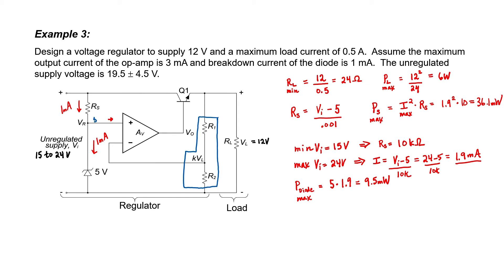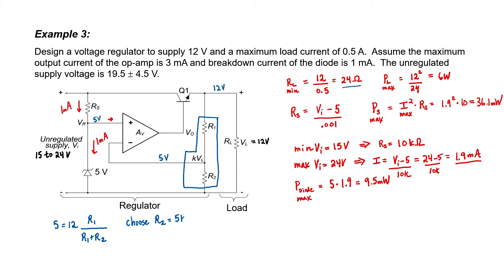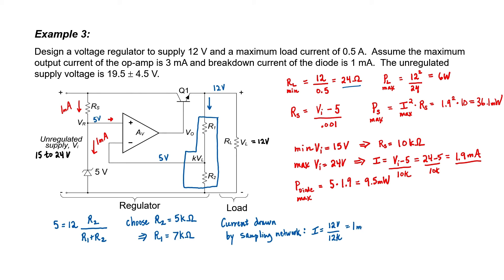We now need to design our feedback network. Since the Zener diode has a breakdown voltage of 5 volts, we need to ensure that the other signal going into the op amp is also 5 volts. Our voltage regulator is supposed to give us 12 volts at the output, so I need to design the voltage divider to give us 5 volts starting from 12. Our load resistor is a pretty small resistor at 24 ohms, so the voltage divider values need to be large relative to the load. Let's choose R sub 2 at 5 kilo ohms; from the equation, R1 needs to be 7 kilo ohms. The total resistance along the sampling network is 12 kilo ohms, so with 12 volts on the rail, the current is 1 milliamp — only 0.5% of the maximum load current.